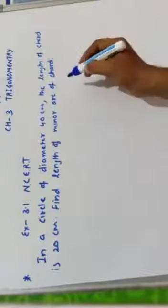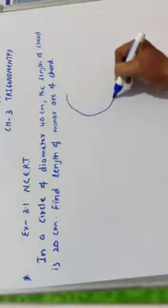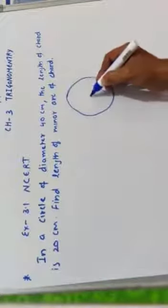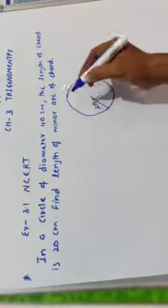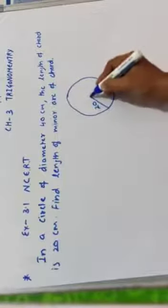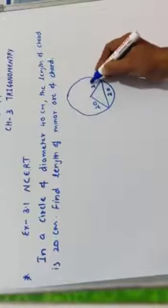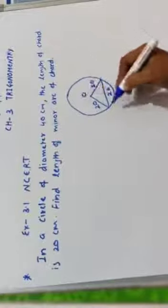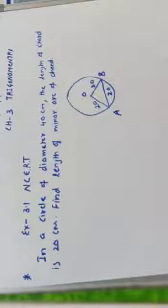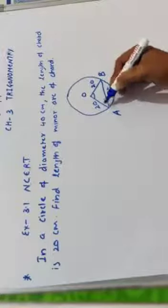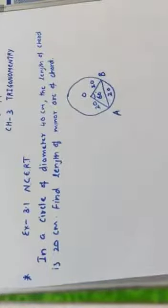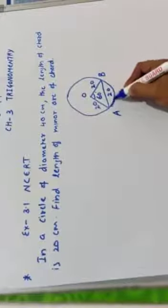Next question. In a circle of diameter 40 cm, the length of chord is 20 cm. Find the length of minor arc of chord. Suppose circle with radius 20, because diameter is 40, then radius will be 20. Code is also 20. Radius is 20. Obviously, triangle OAB is an equilateral triangle. Then angle AOB will be 60 degree. Now we have to find length AB.